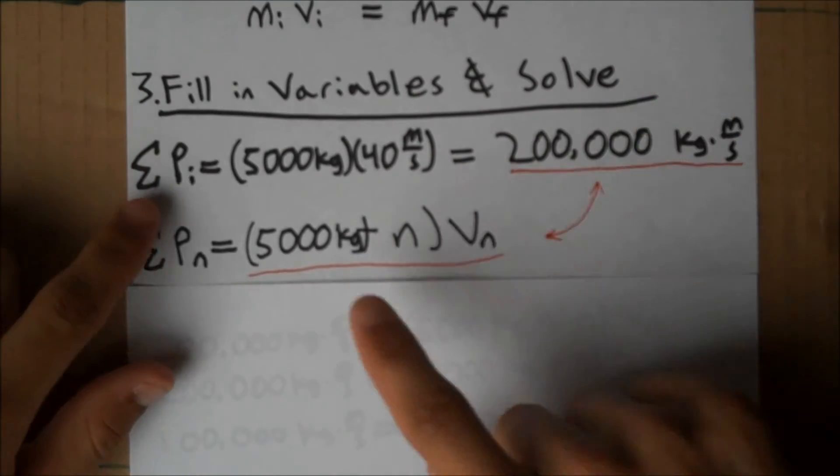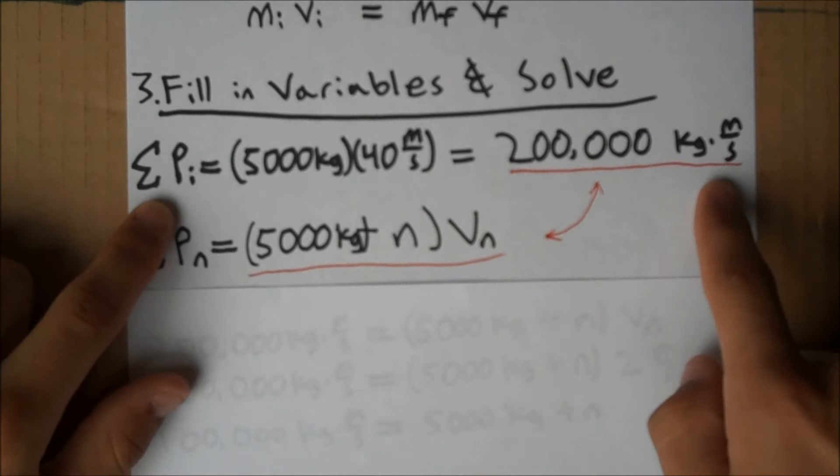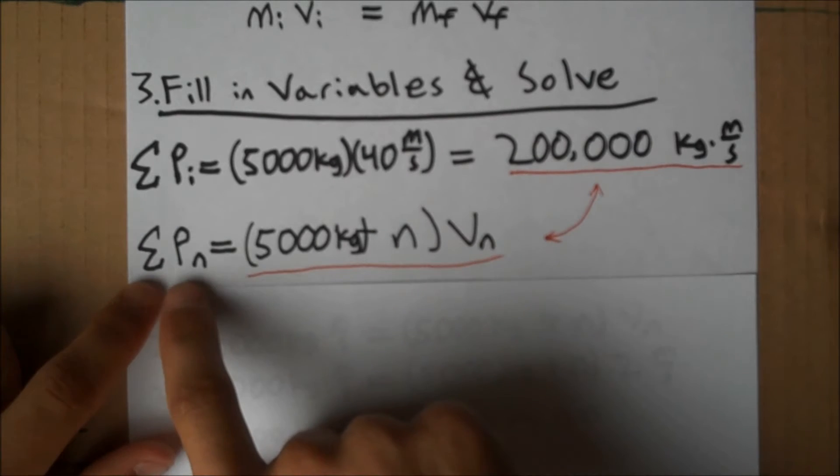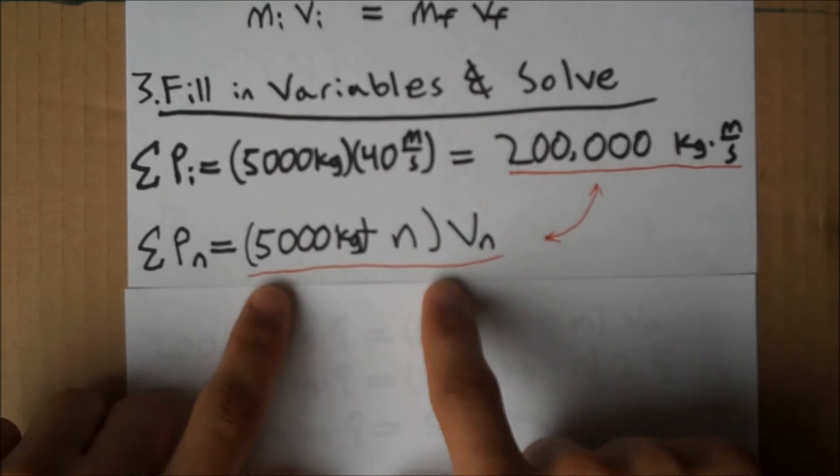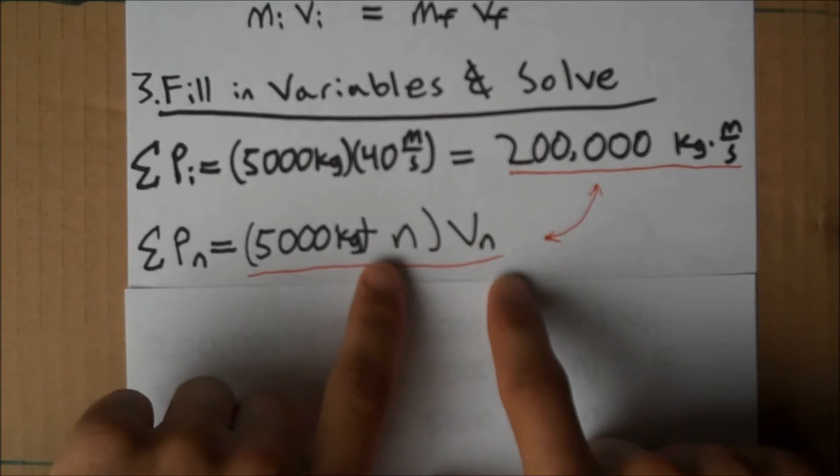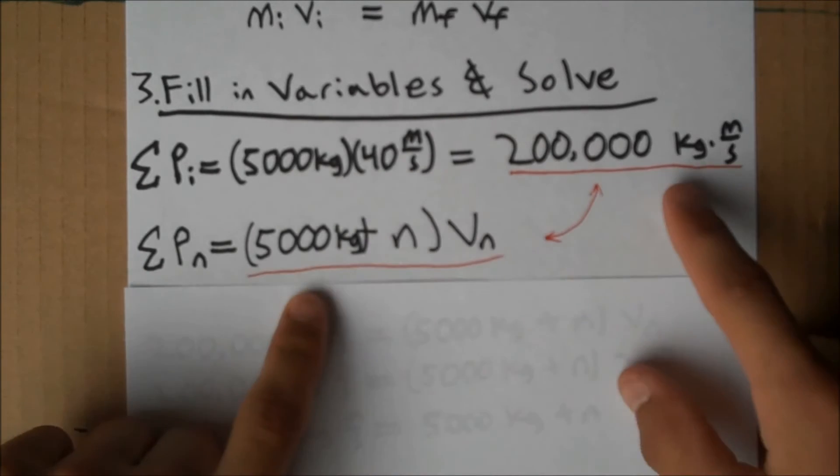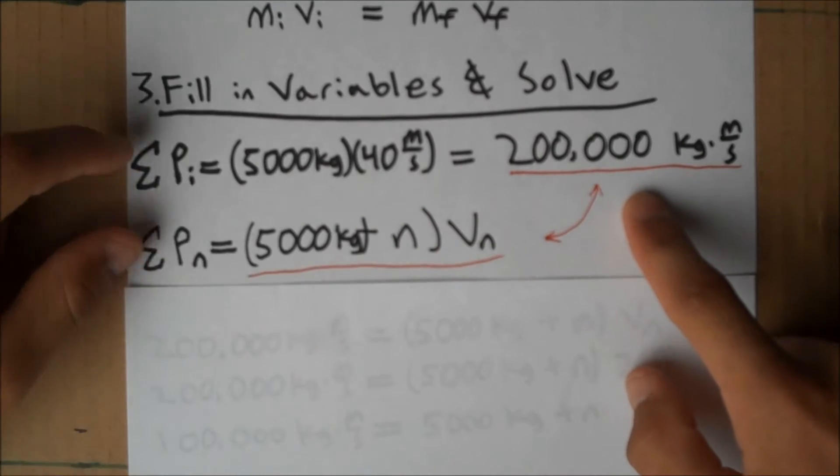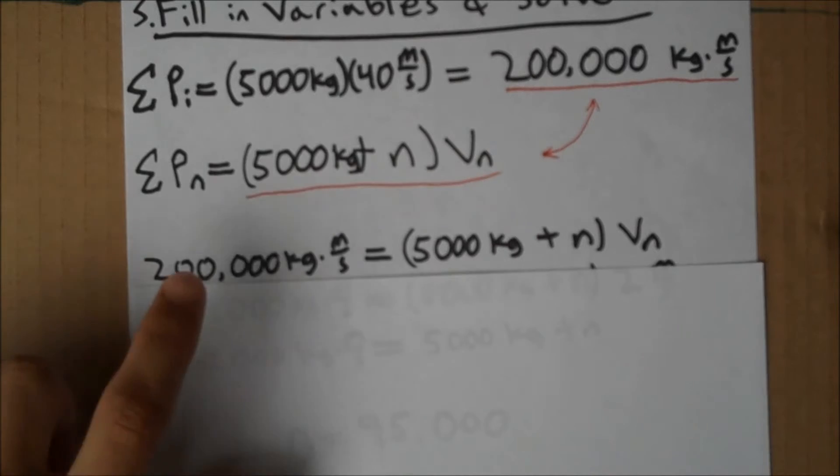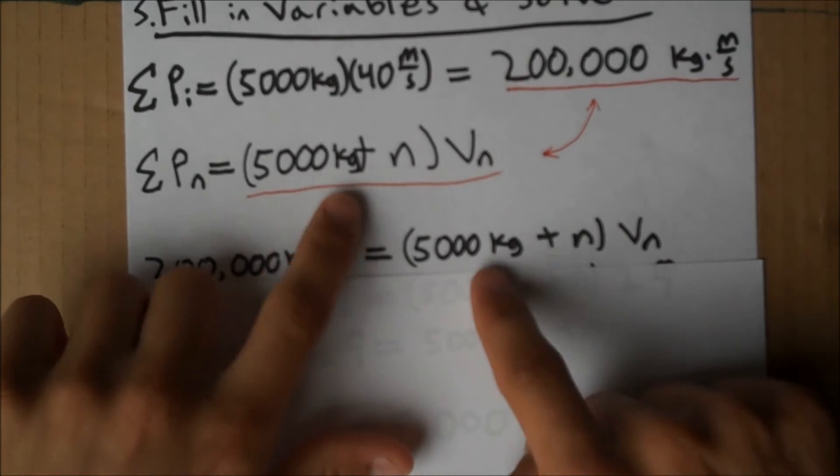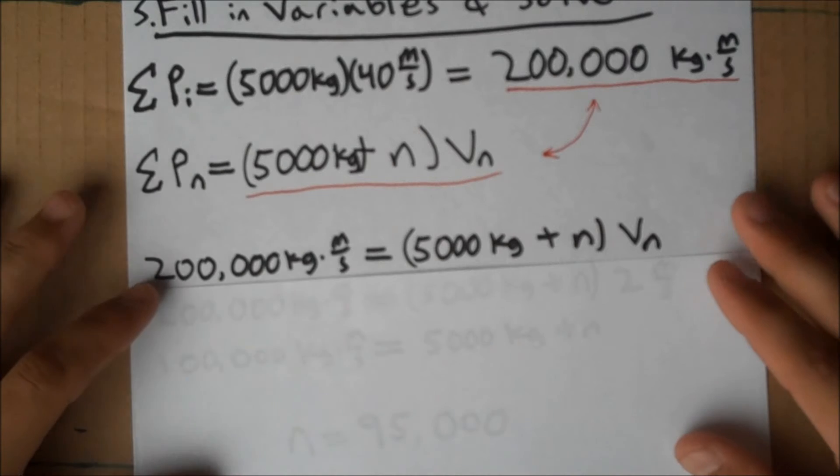The expressions we've obtained here for initial momentum, 200,000 underlined here in red, and final momentum 5,000 plus n times v sub n. So, we can equate these two underlined expressions for the initial and final momentum. Doing so, we get 200,000 equals 5,000 plus n times v sub n.